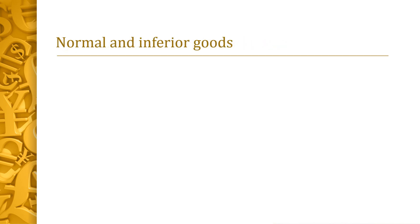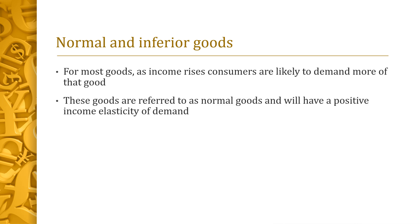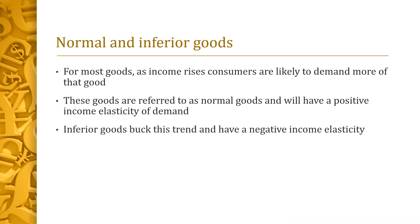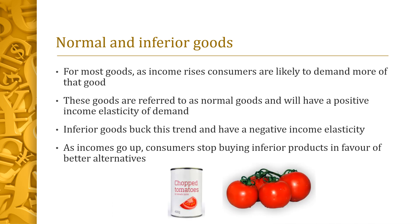For most goods, as income rises, consumers are likely to demand more of that good. These goods are referred to as normal goods and will have a positive income elasticity of demand. Inferior goods buck this trend and have a negative income elasticity — as incomes go up, consumers stop buying inferior products in favour of better alternatives. For example, people might stop buying tinned chopped tomatoes in favour of fresh tomatoes.